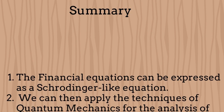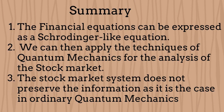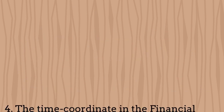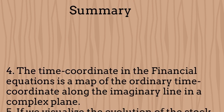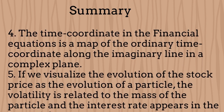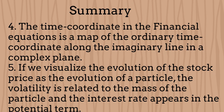In summary, the financial equations can be expressed as a Schrödinger equation of quantum mechanics, and we can implement the standard techniques of quantum mechanics for the analysis of the stock market. The stock market itself doesn't preserve information as in ordinary quantum mechanics. The time coordinate in quantum finance is a map of the standard time coordinate along the imaginary line on a complex plane. If we visualize the stock price as a particle moving through space, its mass is related to the volatility and the interest rate appears inside the potential terms of the corresponding Hamiltonian.